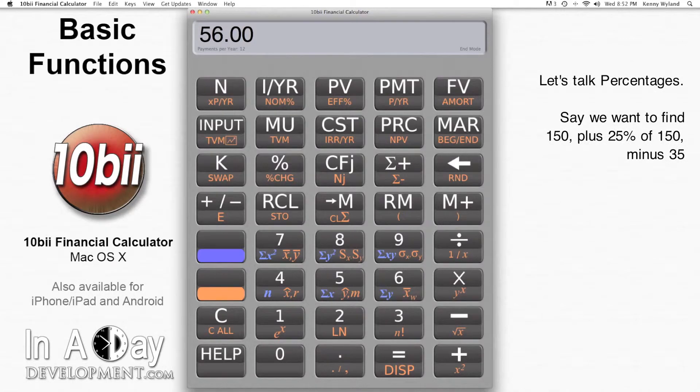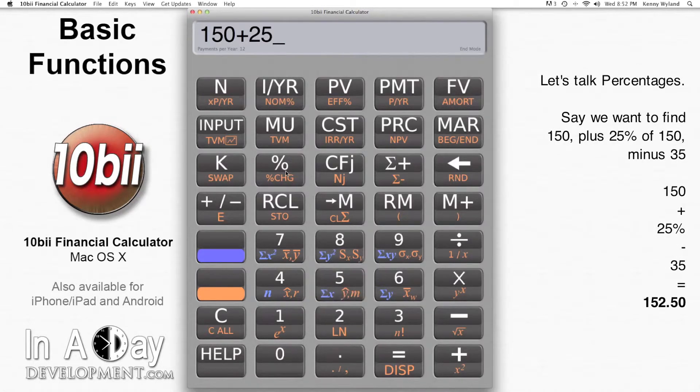Let's say we want to take 150 plus 25% of 150 minus 35. No problem. We type in 150 plus 25%, minus 35, and hit enter. We get 152.5.